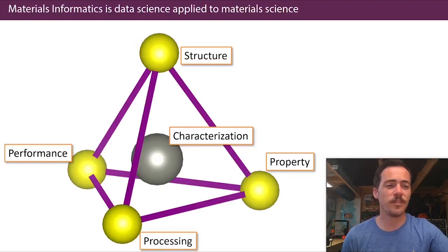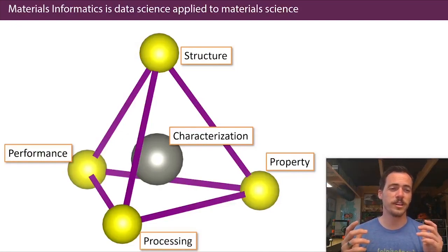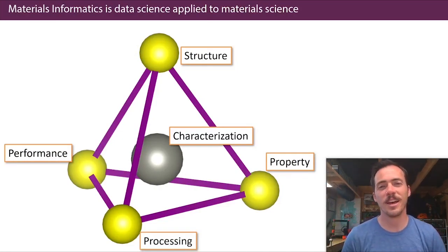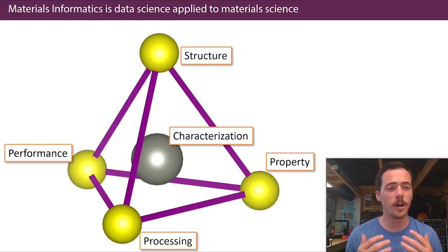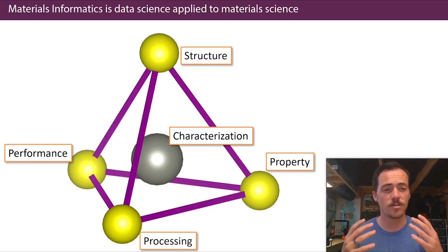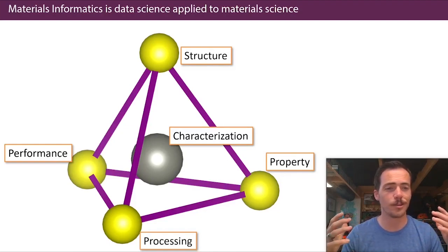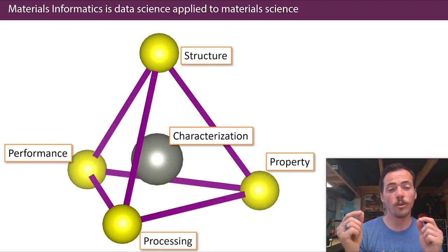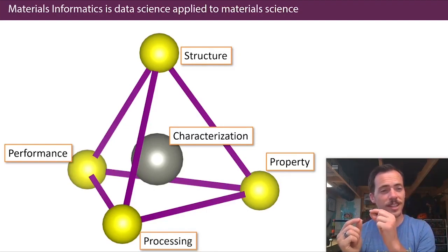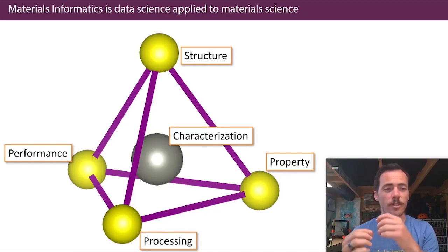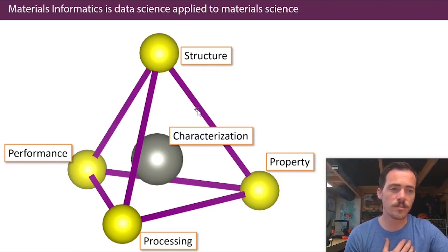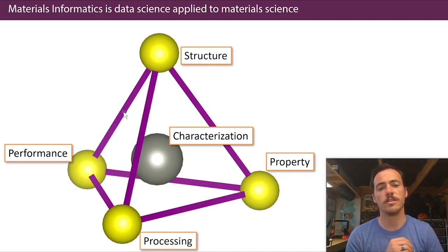To answer that question, we need to dive into what is the heart of material science and the core. You've seen this before — you're familiar with the tetrahedron probably. Material science is all about the study and investigation of structure-property-processing relationships. If you know what property you want to get a certain performance, you know how you need to process the material to get that structure. Understanding these linkages is the core component of material science and engineering.